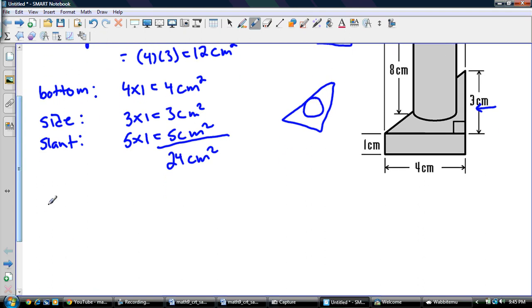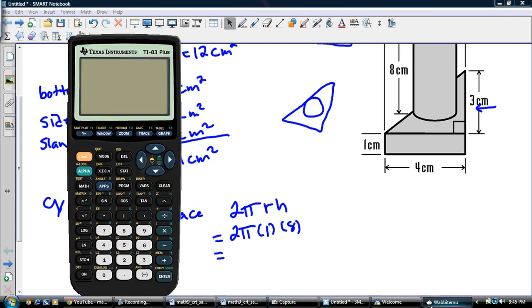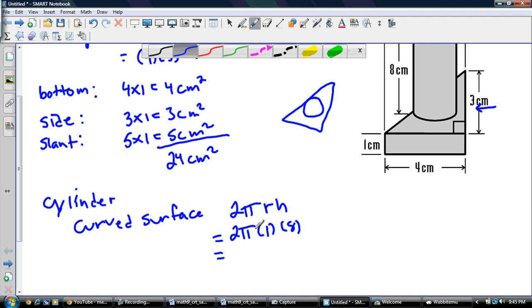So, all I have to do now for my cylinder is write out my curved surface. And my curved surface is 2 pi r h, so 2 times pi times the radius, which we called 1, times the height, which was 8. So, that's going to be 16 times pi, so 16 times 3.14. I know it has a pi button, but on CRT, it's probably going to ask you to use 3.14 pi, and that's going to give me 50.24 centimeters squared.